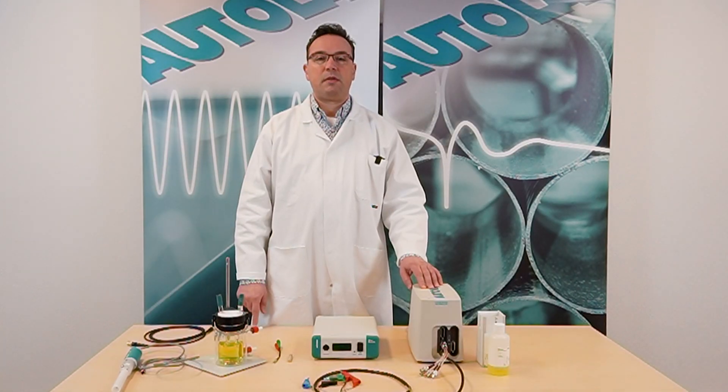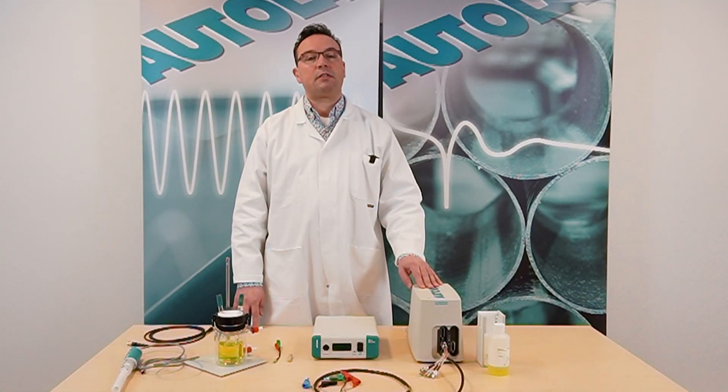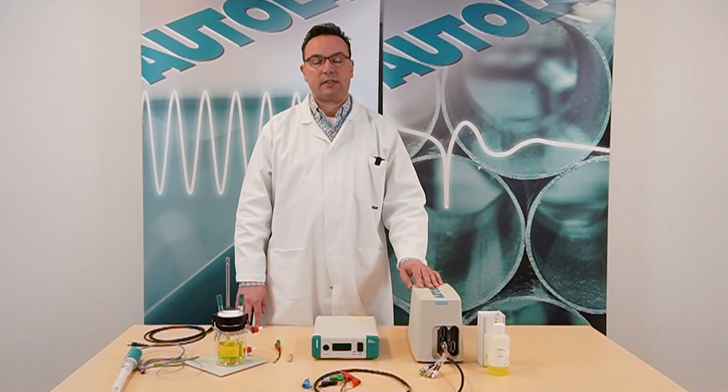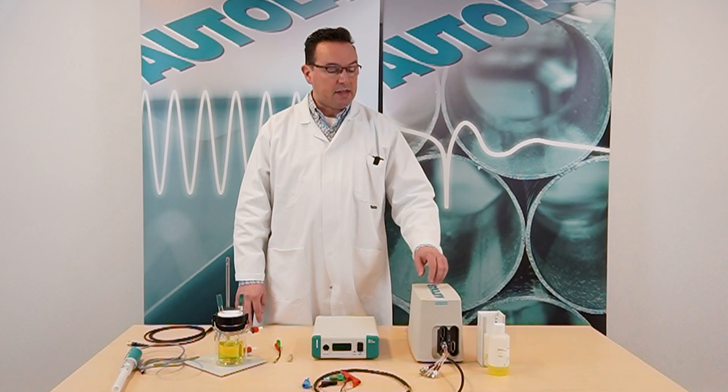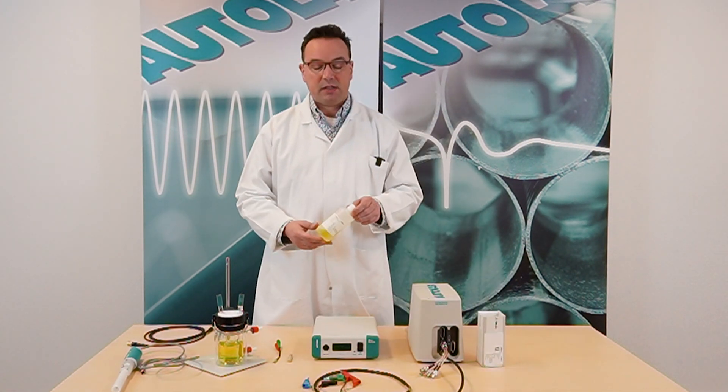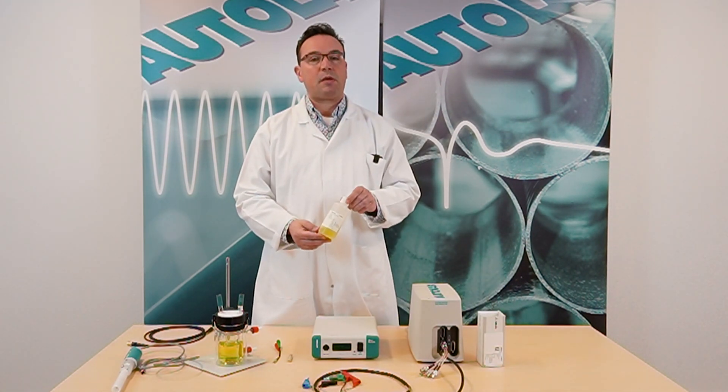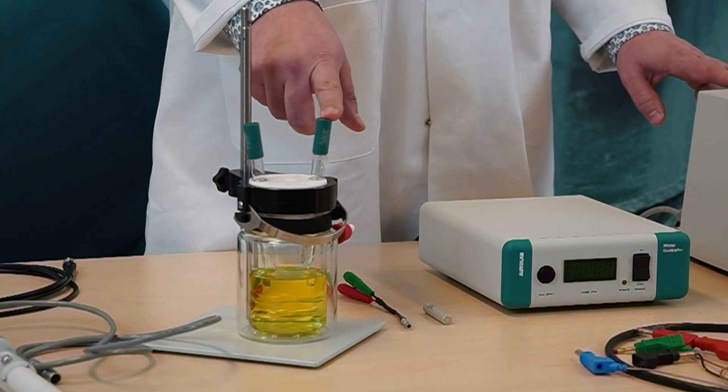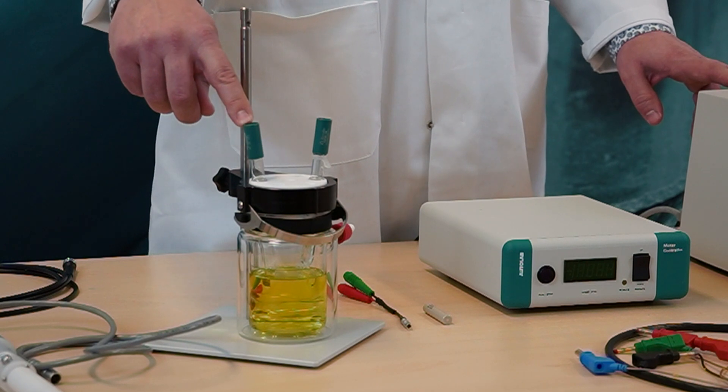The following experiment we are going to study the mass transport characteristics of ferro-ferri redox reaction using the Autolab rotating disc electrode. The electrolyte used in this experiment is a redox standard which can be purchased from Metrohm. We use a standard silver-silver chloride reference electrode and a platinum sheet counter electrode.